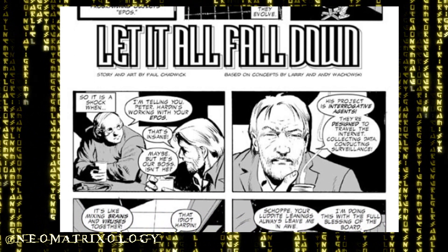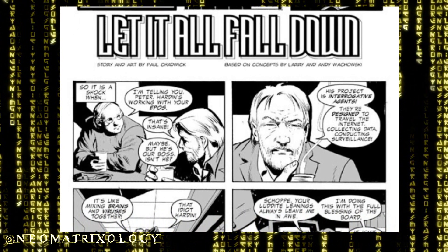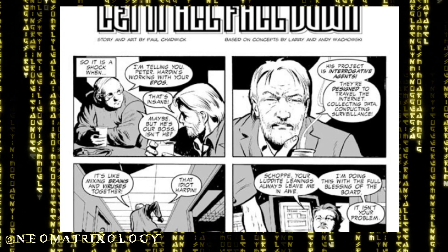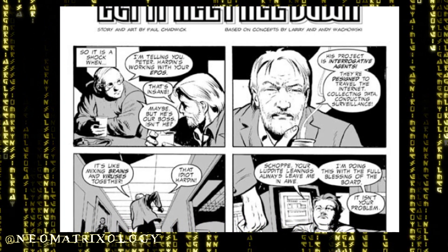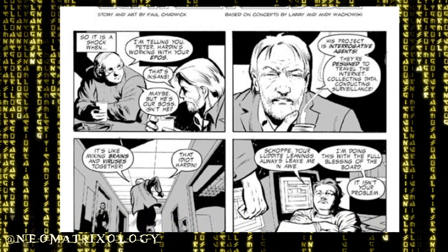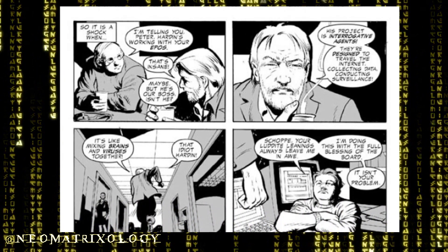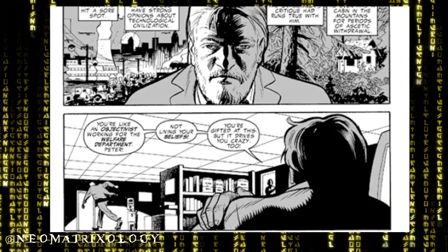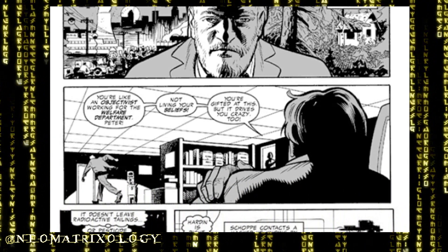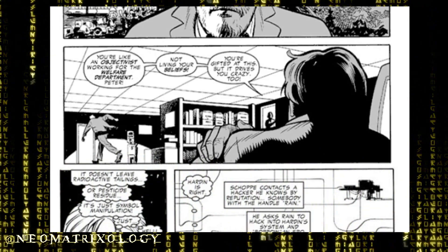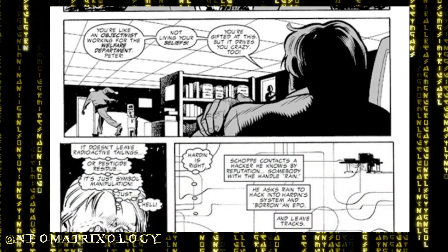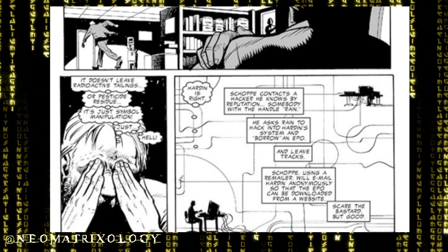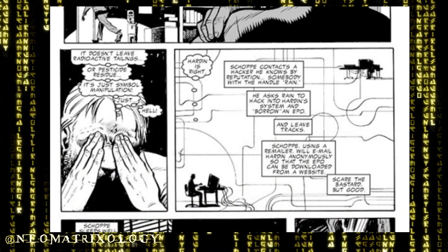All the more reason why Peter is so surprised when a colleague informs him that their boss, named Hardin, is experimenting with Peter's creation. Hardin combined Peter's EPOs with his own interrogative agents, designed to scrape the internet and conduct surveillance. When Peter confronts his boss about the potential danger, Hardin tells Peter that he has the board's full support and it isn't his problem. Peter decides he'll teach Hardin a lesson by recruiting a hacker he knows, by reputation only, named Rain, to hack into Hardin's system and steal an EPO.